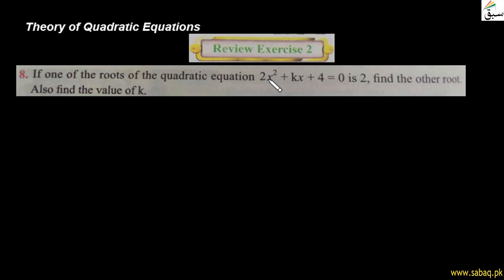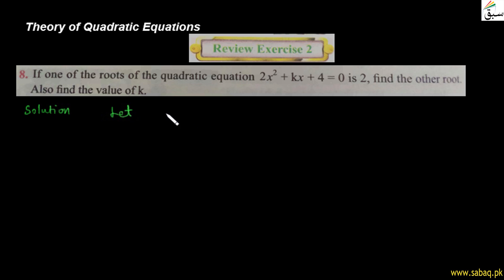یعنی اس quadratic equation 2x² + kx + 4 = 0 کا ایک root 2 ہو تو دوسرا root کیا ہوگا اور k کی value بھی بتانی ہے۔ Working start کرتے ہیں — suppose کر لیتے ہیں کہ اگر alpha اور beta اس equation کے roots ہیں، اور alpha یعنی first root 2 ہے۔